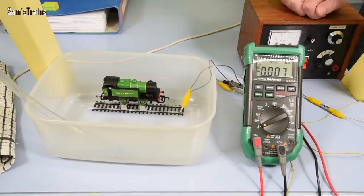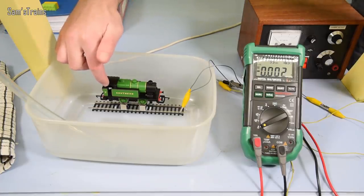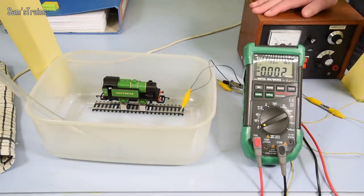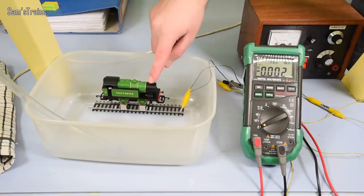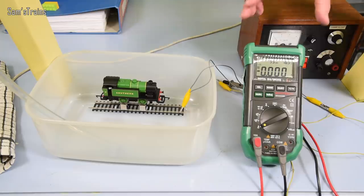And then we'll go the whole hog and fill it right up over the level of the loco. Now it might just float away, which wouldn't be great. I don't think it will though, because there are gaps quite high up on the bodywork, so I think most of the air can escape. But if it does just float away we might have to add some weights or maybe drill a hole in the top of the chimney. So I'm going to set this camera up so that you can see the loco and the ammeter nice and clearly, and we'll give this a try and see what happens.